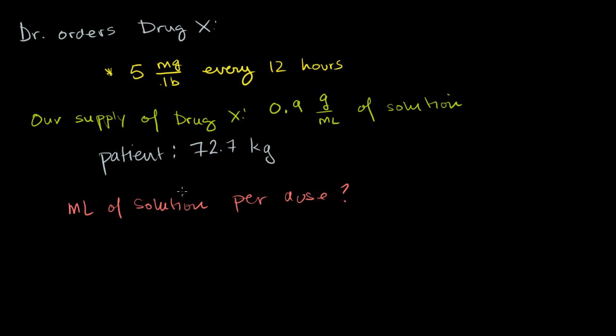So the first interesting thing, and this is just something that you might need to know, or you might have it written down on paper, or you might have a calculator that does this, is just how to convert kilograms to pounds. And it's good to know in general if you're converting between the metric and the English systems. So one kilogram is approximately equal to 2.2 pounds.